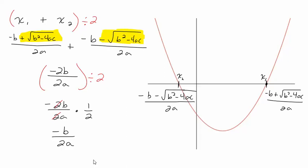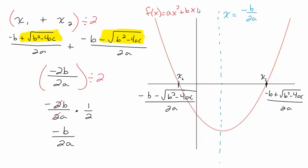What did we just do? We found the halfway point between the two x-intercepts — we derived a formula for the axis of symmetry. The axis of symmetry is negative b over 2a, where a and b are the same coefficients from your standard form equation. If you know the equation of your parabola, you can find the axis of symmetry — and more importantly, the x-value of your vertex — simply by computing negative b over 2a. We just proved it will always work.